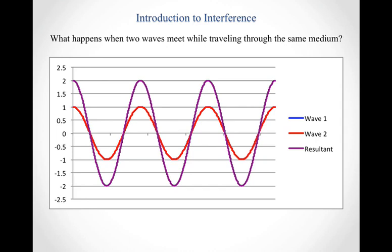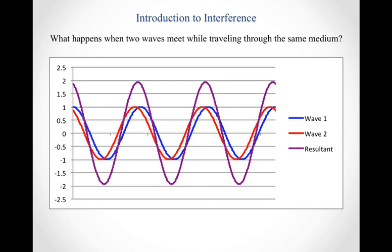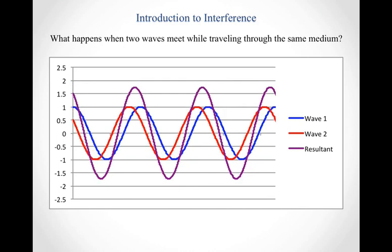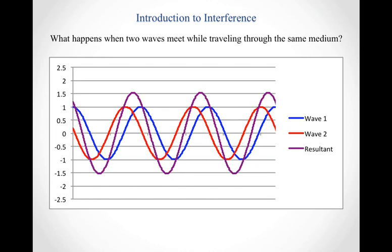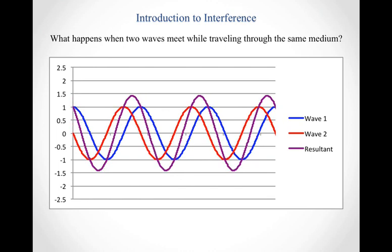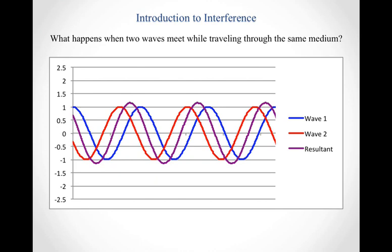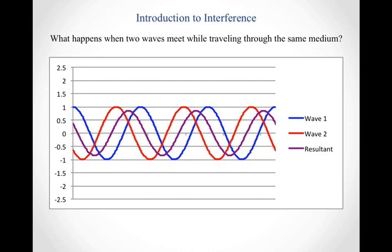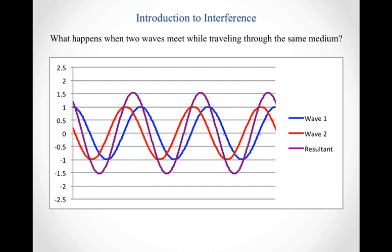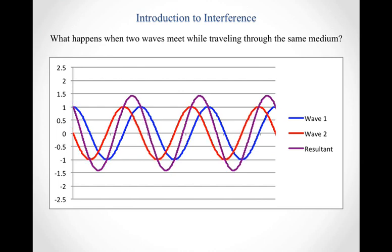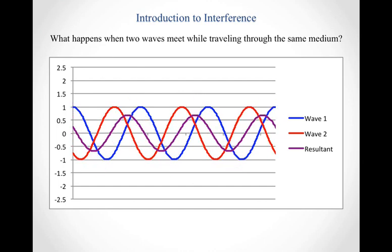What happens when we let the phase of wave 2 differ from wave 1? As we increase the phase of wave 2, those waves start to shift relative to each other. The more they shift away from each other, the smaller the resultant wave gets. The resultant wave gets smaller and smaller, eventually crossing the point where its amplitude is smaller than the individual waves.